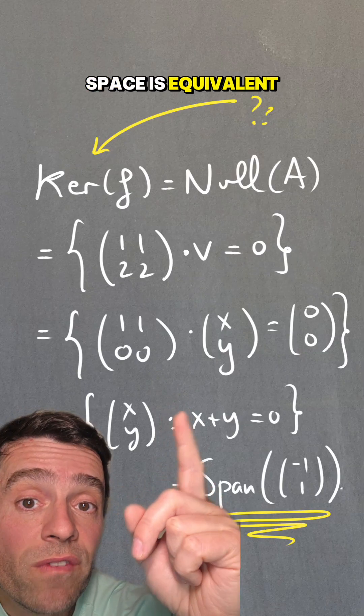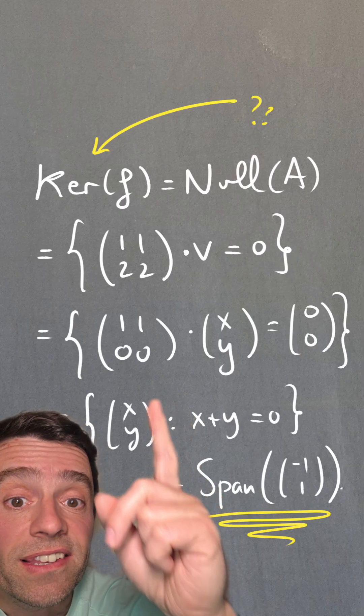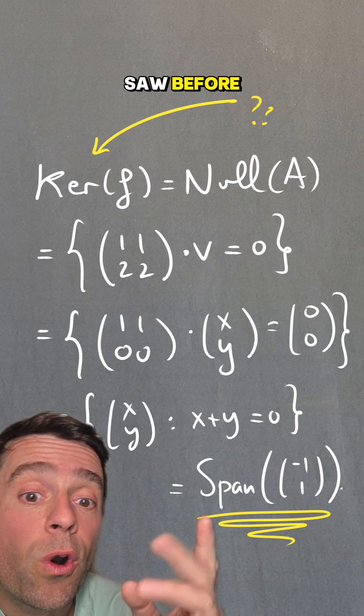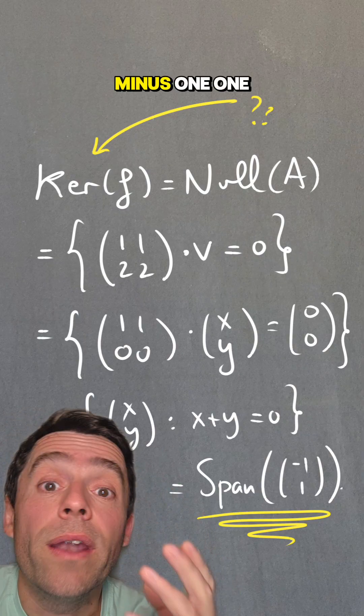And this null space is equivalent to finding (x,y) such that x+y is equal to 0, which, as we saw before, is the span of the vector (-1,1).